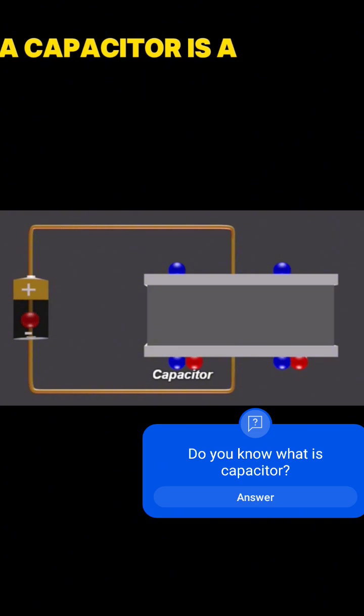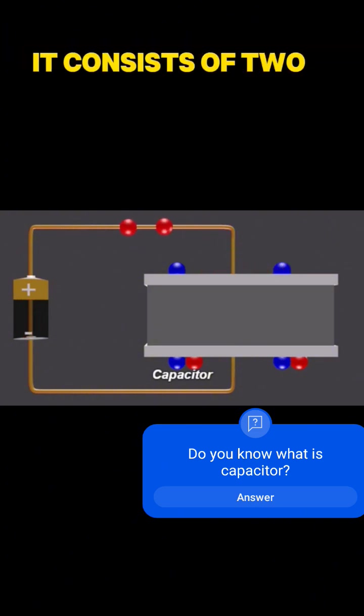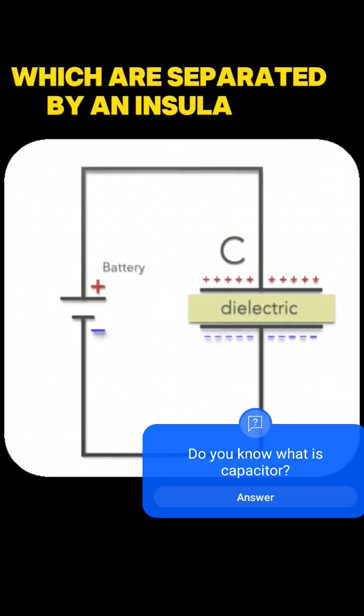A capacitor is a device used to store and release an electric charge. It consists of two electrically charged plates which are separated by an insulator.